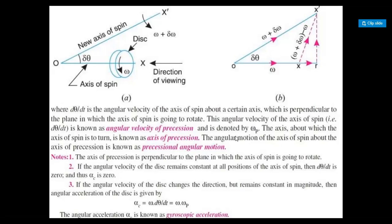Third, if the angular velocity of the disk changes direction but remains constant in magnitude, then the angular acceleration is given by alpha_c = omega × (d theta / dt), where d theta / dt equals omega_p, the angular velocity of precession. So alpha_c = omega × omega_p. This Coriolis component of angular acceleration is known as the gyroscopic acceleration.